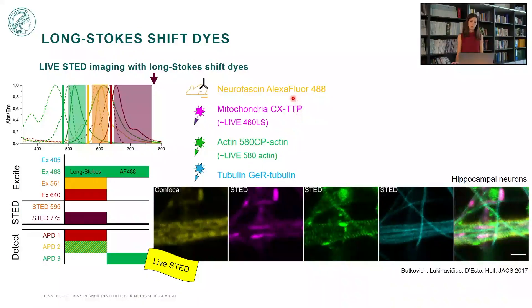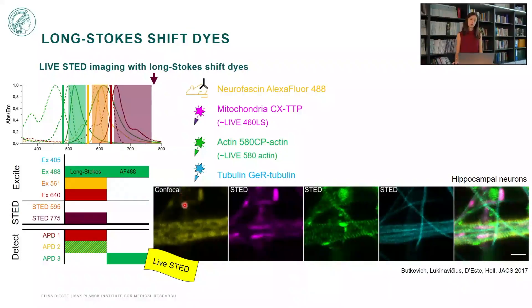Here is an example in which we use a long Stokes shift dye very similar to Live 460 long Stokes shift, targeting mitochondria displayed here in magenta, together with probes targeting actin and microtubules that are small molecule-based. In this case we could even add a fourth channel to our imaging scheme in the 488 channel — here we used a primary-secondary antibody labeling with an antibody recognizing an extracellular epitope expressed only on one part of the axon in neurons. We could record this fourth channel in a second step compared to imaging all the first three dyes. So using long Stokes shift dyes, we can image three colors simultaneously in STED modality and even a fourth channel in confocal mode.